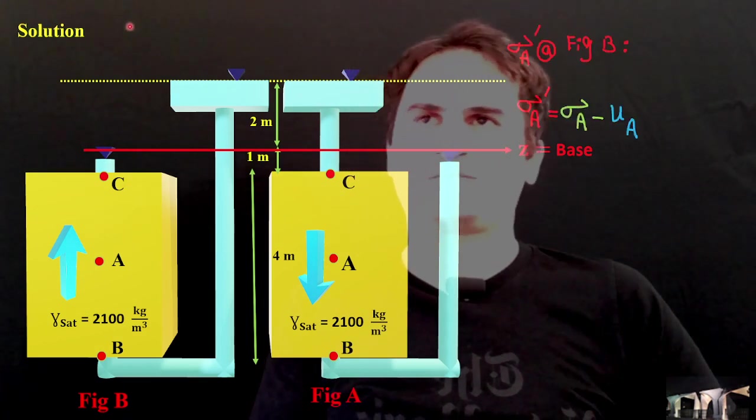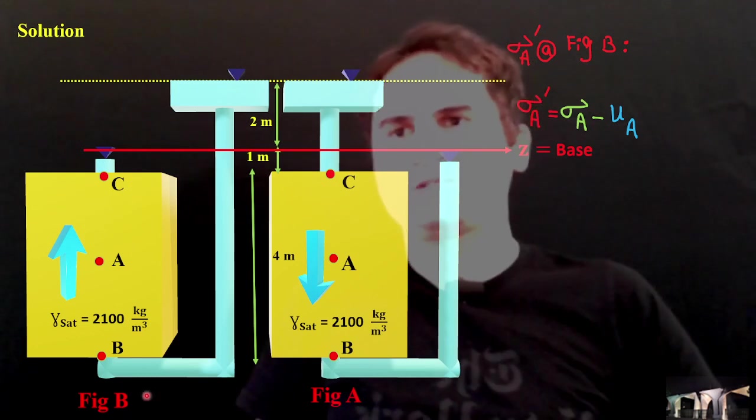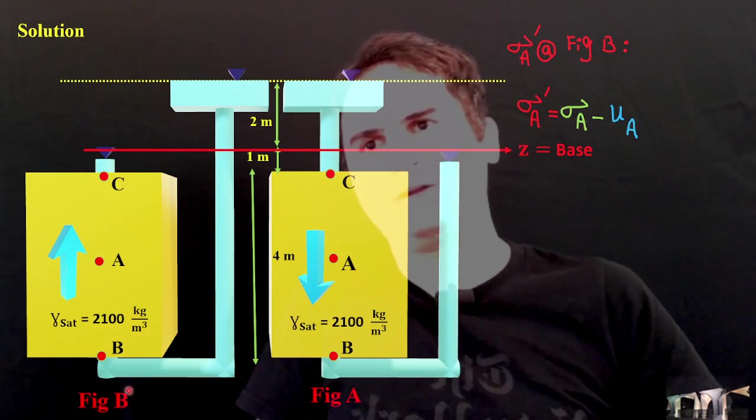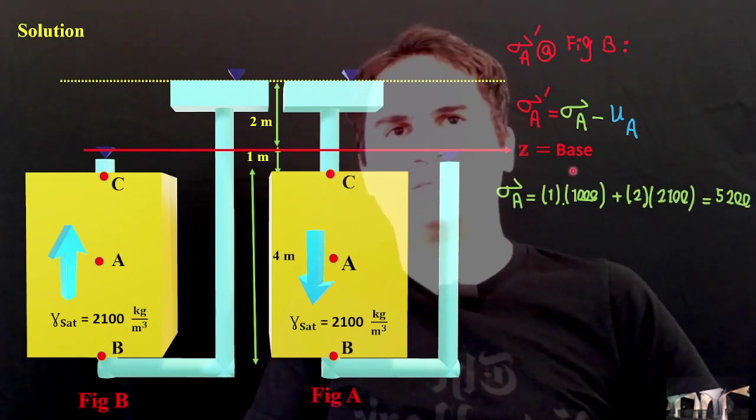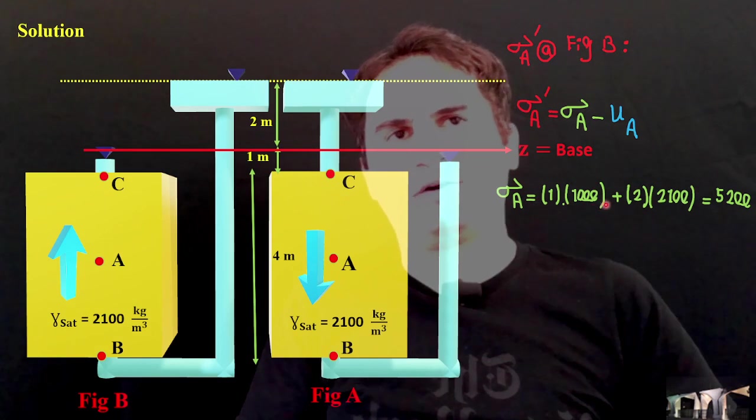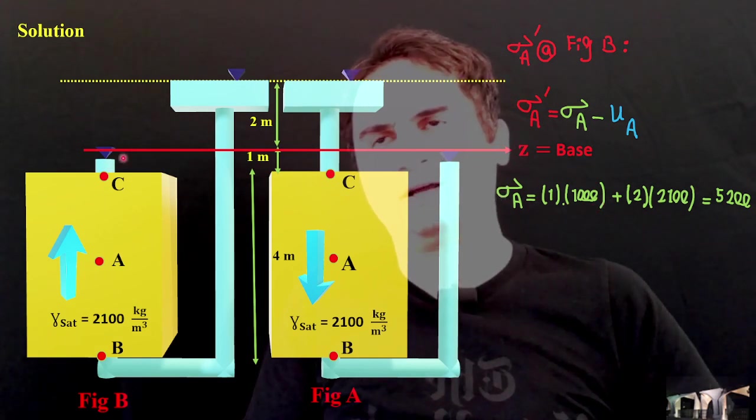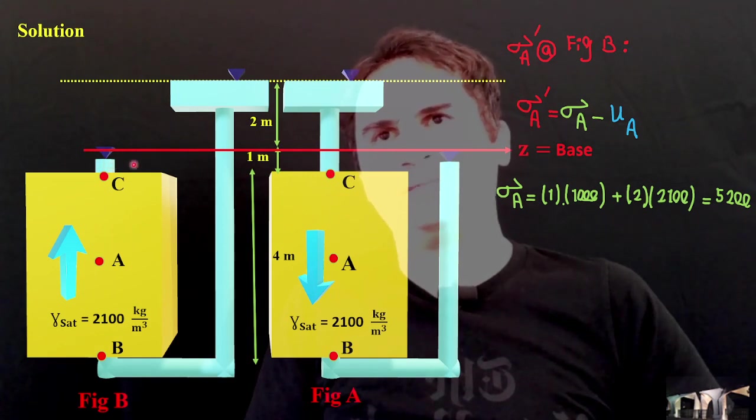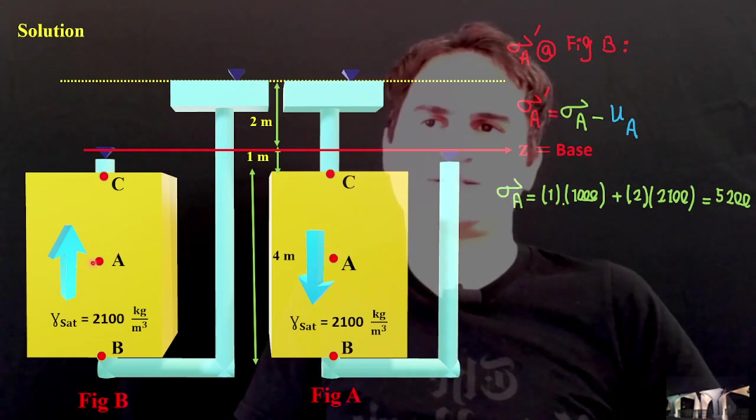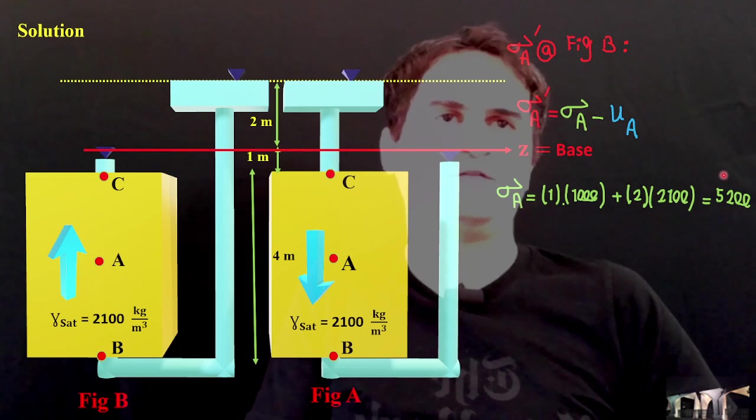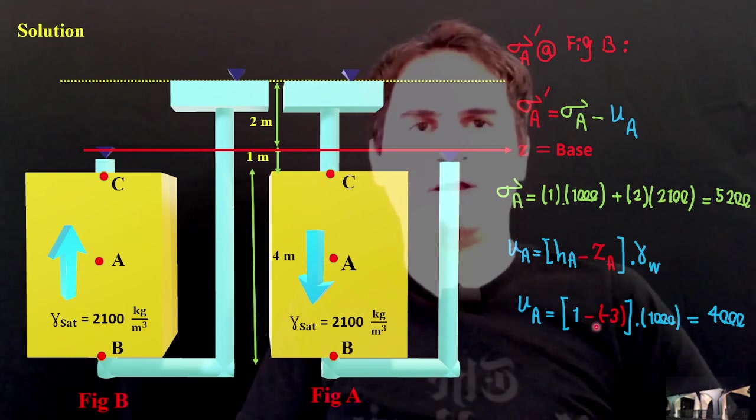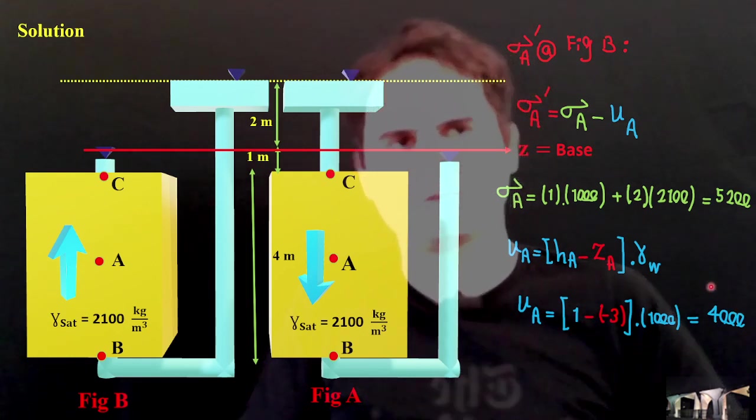Let's attempt the sigma prime, this time for B. Again, the same approach, but different numbers. Sigma prime at A, sigma A minus U_A for figure B, the same center. Sigma A is 1 times 1,000, which is the amount of the height of water, which is 1 meter, as you can see here, plus 2 times 2,100, which is gamma saturate for soil B. And it just turns to be 5,200 for sigma A. And U at A, it's H_A minus Z_A, which is again 1 minus a negative 3 times 1,000, which turns to 4,000.